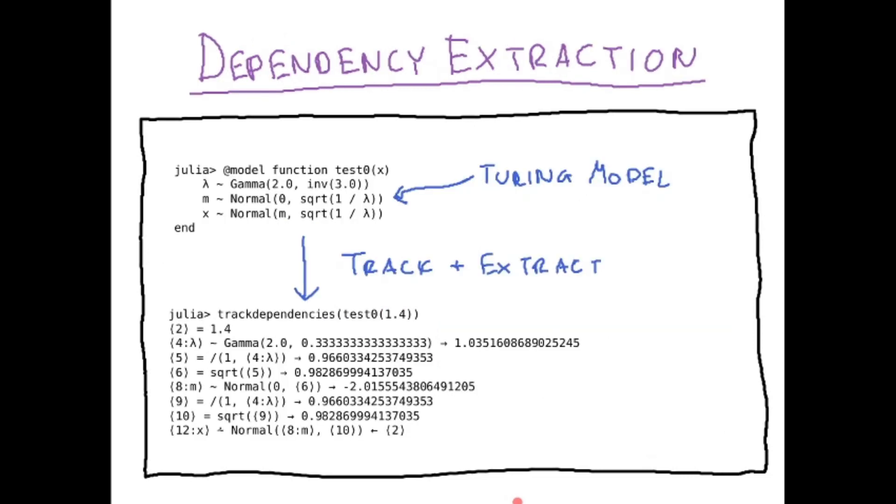Once you have this, you can take a Turing model, get its function, track it, and extract a dependency graph like the one shown below.